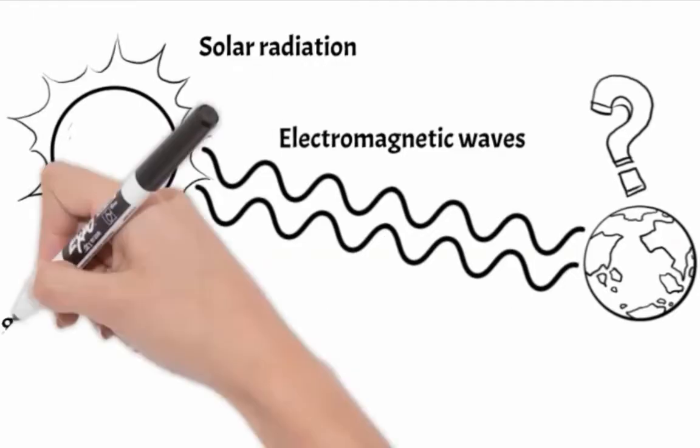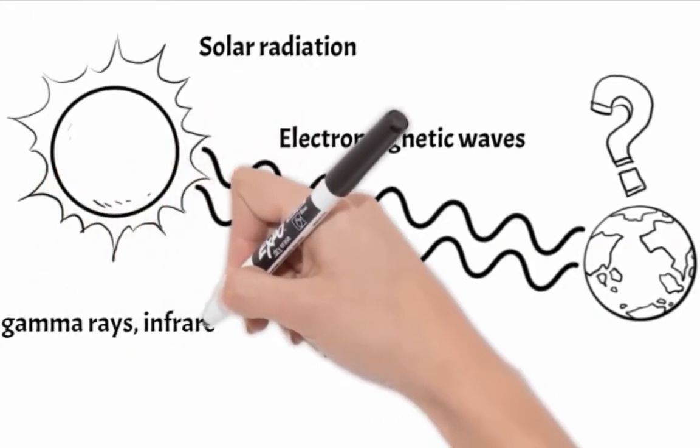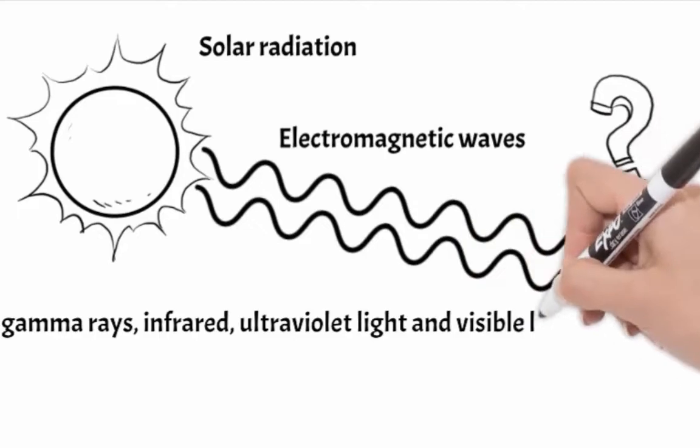This collection of electromagnetic waves include gamma rays, infrared, UV light and visible light.